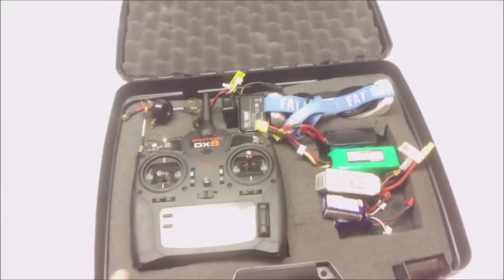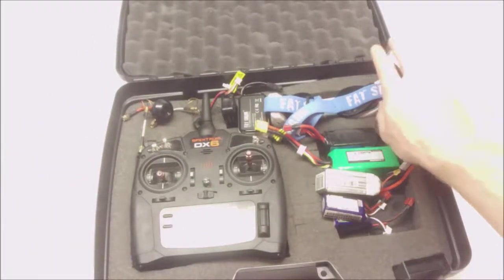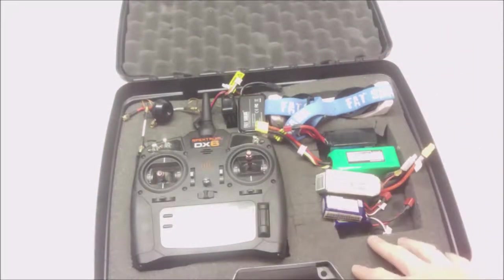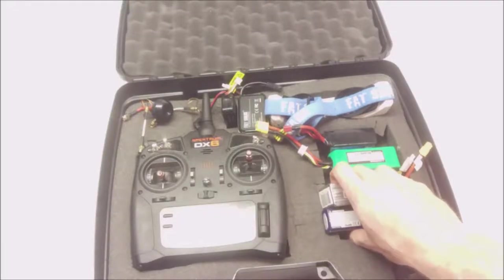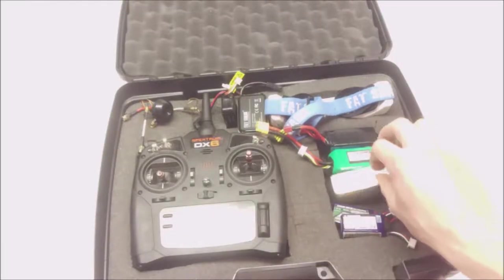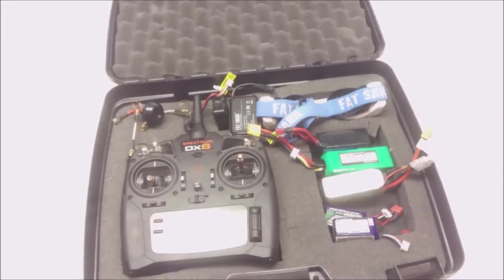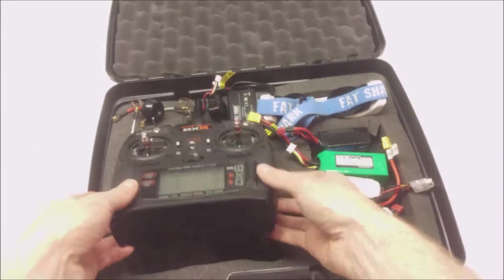So I've got my transmitter in here, I've got my FPV goggles, a couple batteries for the FPV goggles, an assortment of batteries. Just for my various quads, you can see a few sizes here. I've got a few others charging right now, hoping to go out flying a little bit later. That's that, pretty basic.